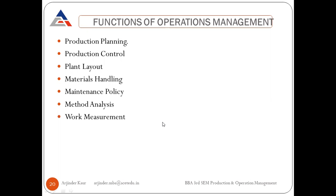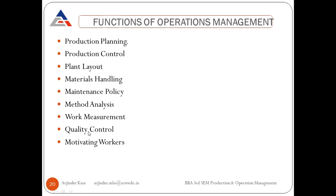Quality control ensures the best quality of products or services being delivered. To perform all these functions and get work done through workers, there is a need to motivate workers continuously. In production, people are pushed hard to produce large quantities in minimum time at minimum cost, which can cause frustration. Workers may revolt if overly stressed, so to prevent resistance from workers, they must be motivated on a regular basis.